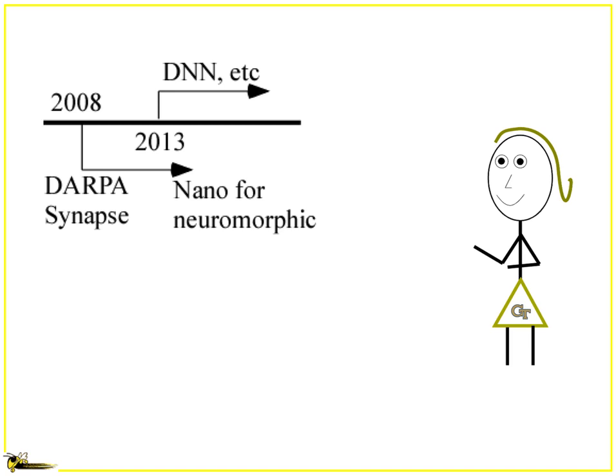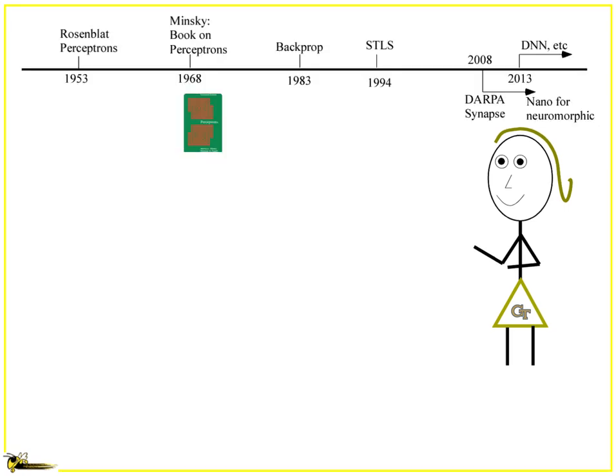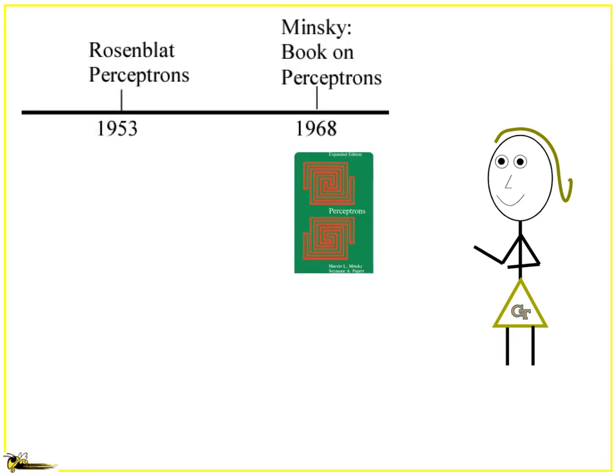First, I want to start by thinking about how most people are looking at the world. They usually think, oh yeah, there may be some of these nano things, and all the world is deep neural networks. But to get a sense of where we came from, you've got to go back a little bit. It's useful to know that you had things like Turing machines back there, almost 100 years ago.